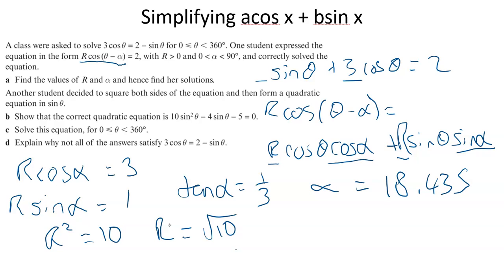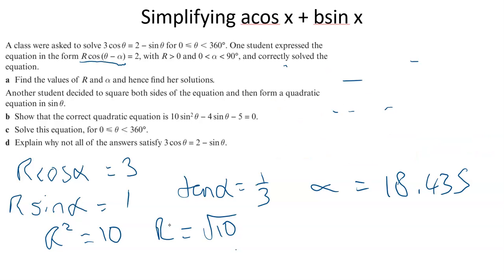Find the values of R and α and hence find her solutions. I won't do this bit - it's just solving like before. We can rewrite this as √10*cos(θ - 18.435°) equals 2. Divide by √10, inverse cos, do your cast diagram, and find your solutions. That's a cast diagram question from now on, so I'll leave that with you.